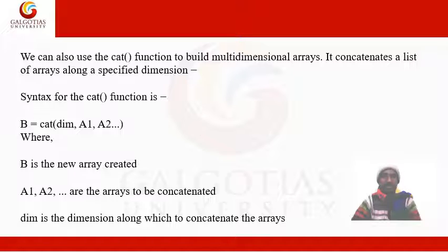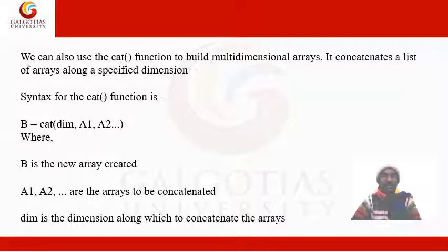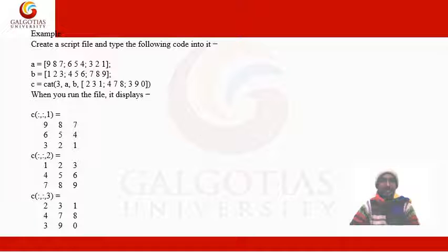We can also use the cat() function to build multi-dimensional arrays by concatenating a list of arrays along a specified dimension. The syntax is c = cat(dim, a1, a2), where a1 and a2 are the arrays to concatenate and dim specifies the dimension along which to concatenate. When run, the result shows the first array followed by the second and third arrays.